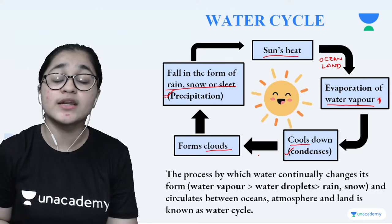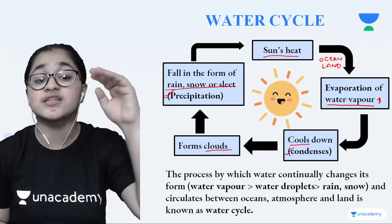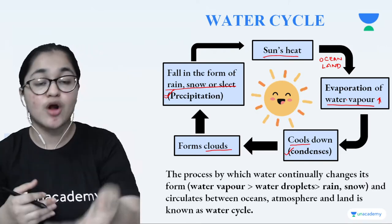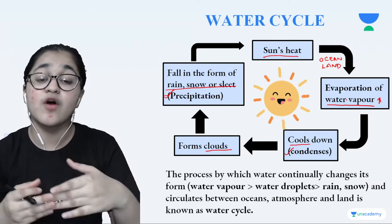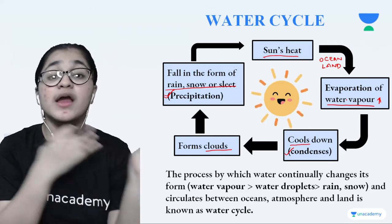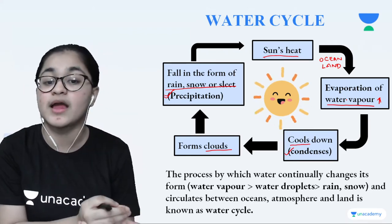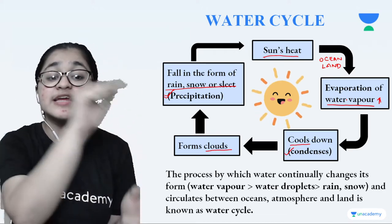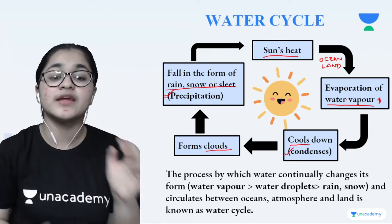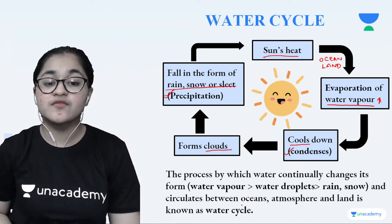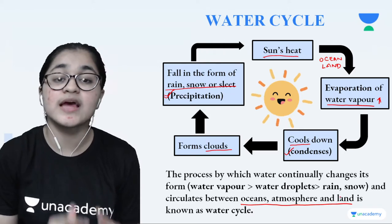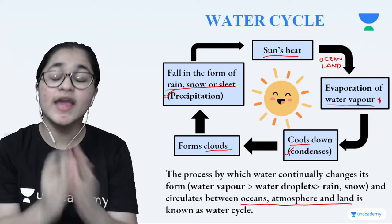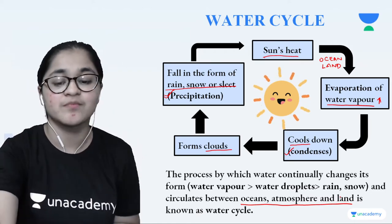The definition of the water cycle is: the process by which water continuously changes its form — first water vapor, then water droplets, then back to earth as rainfall, snowfall, or sleet — and circulates between ocean, atmosphere, and land. This process is known as the water cycle. I hope the entire water cycle process is now clearly understood.